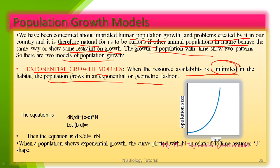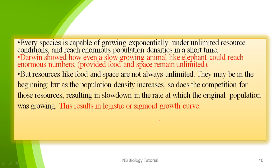When the population shows exponential growth, the curve plotted with N in relation to time is described as the J-shaped curve. Every species is capable of growing exponentially under unlimited resource conditions — meaning there is no limitation of resources — and can reach enormous population densities in a short time.